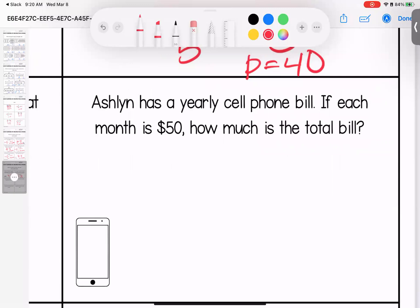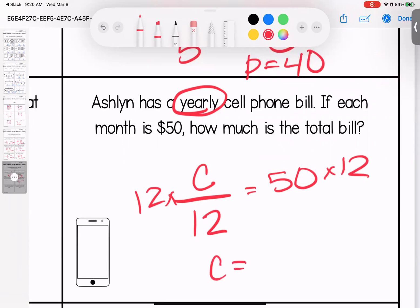Ashlyn has a yearly cell phone bill. If each month it is $50, how much is the total bill? So it is yearly. How many months are in a year? There's 12. So her cell phone bill divided by 12 months equals $50. I want to know what her total bill is. So I'm going to multiply both by 12. Ashlyn's yearly cell phone bill is $600.